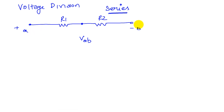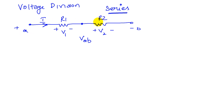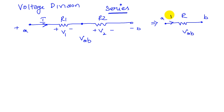The voltage VAB is divided between the first element R1 and the second element R2. So we say that there is a voltage drop V1 here and a voltage drop V2 here, with plus-minus polarity, and we have our current I. Since they share a common point, the same current flows through both resistances. We can draw this as an equivalent circuit: circuit AB with voltage VAB applied and current I. The equivalent resistance R is given by R1 plus R2.